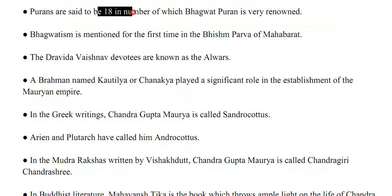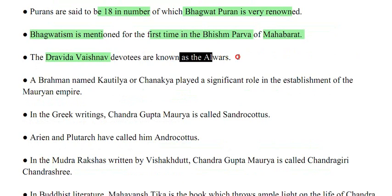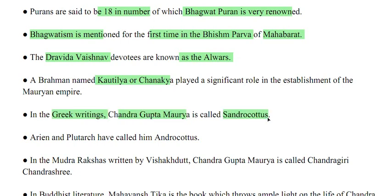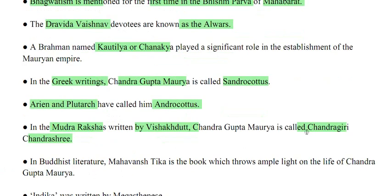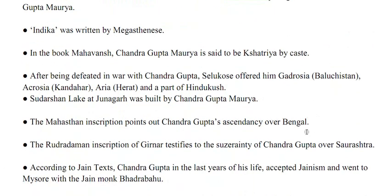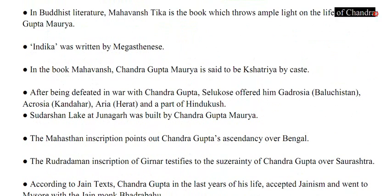Puranas are said to be 18 in number, of which Bhagwat Puran is very renowned. Bhagwatism is mentioned for the first time in Bhishma Parva of Mahabharata. Dravid Vaishnav devotees are known as Alvarsh. A Brahman named Kotilya (Chanak) played a significant role in the establishment of the Mauryan Empire. In Greek writing, Chandragupta Maurya is called Sandrokutas; Arian and Plutarch called him Androkutas. In Mudra Rakshas written by Vishakh Dutt, he is called Chandrasiri. In Buddhist literature, Mahavanshtika throws ample light on his life.